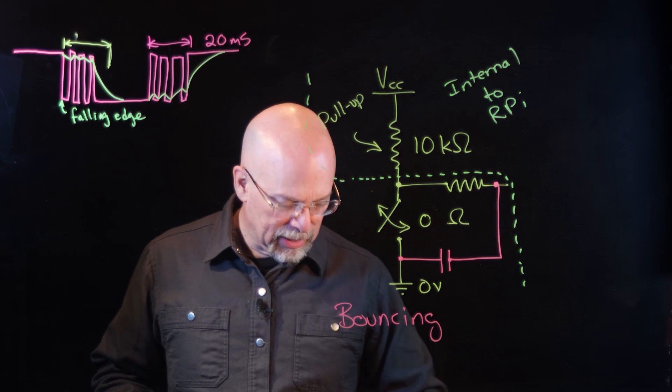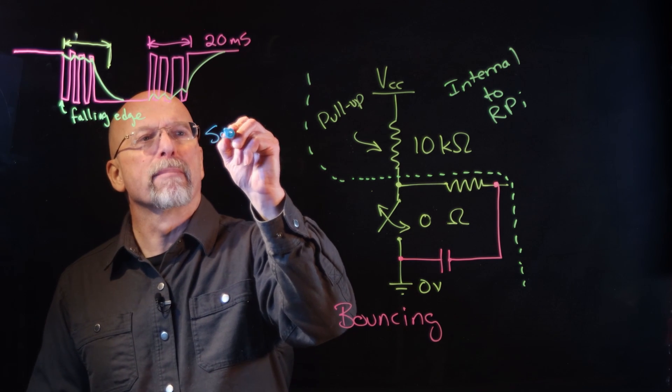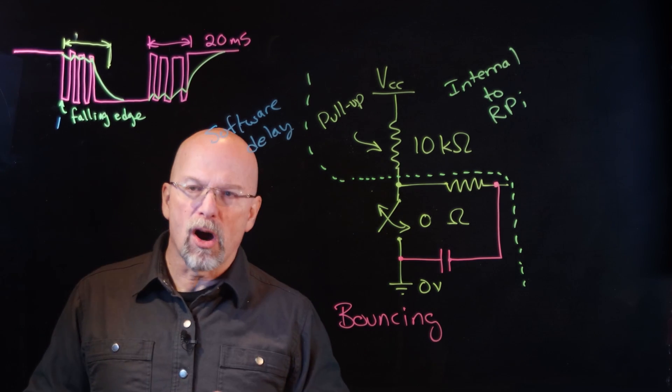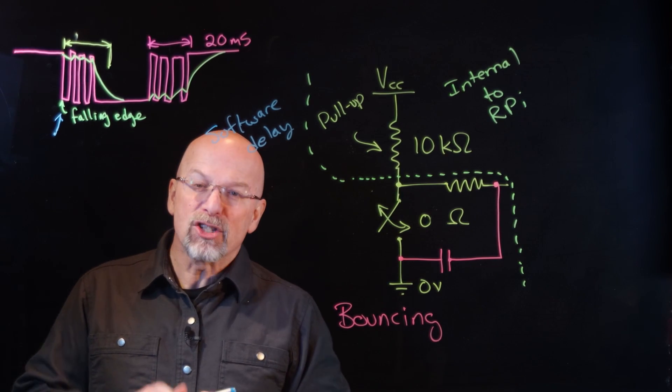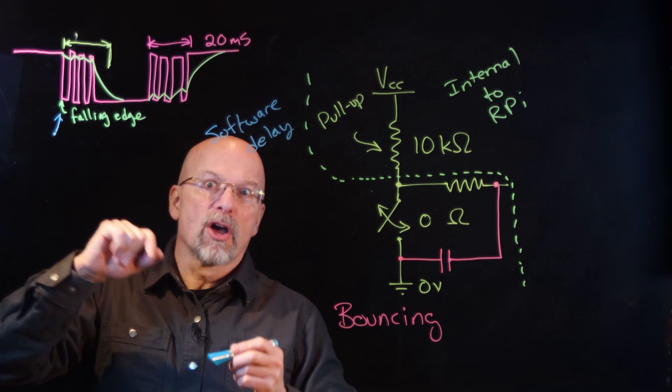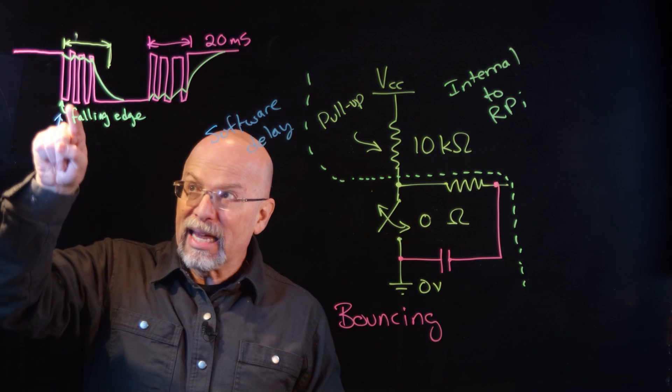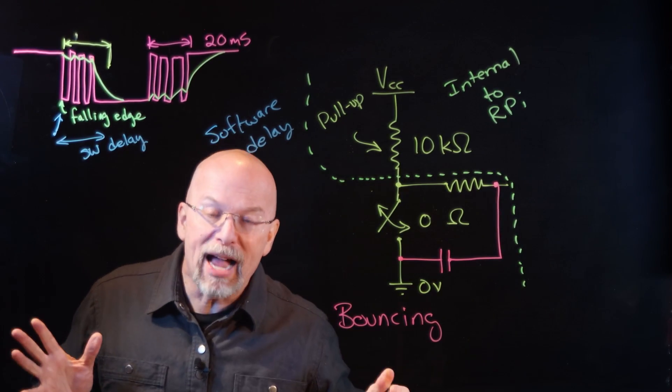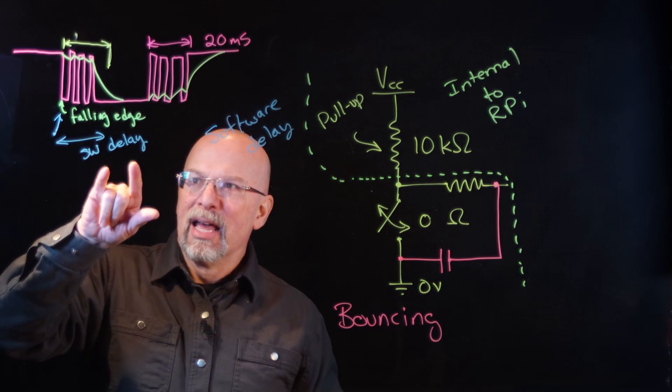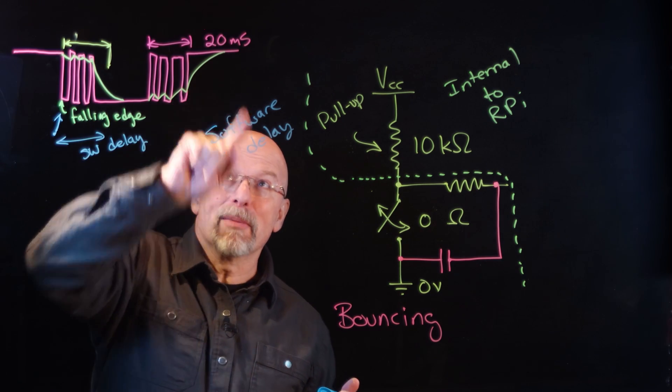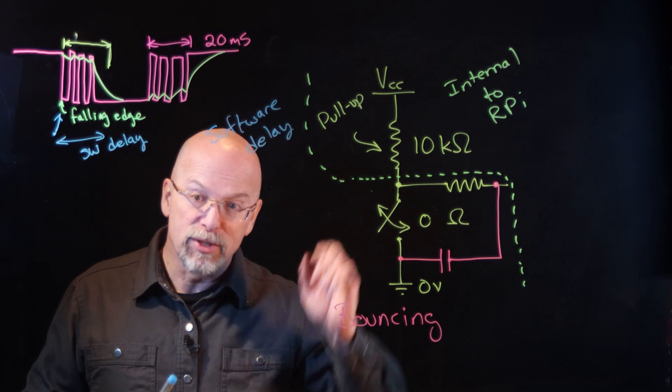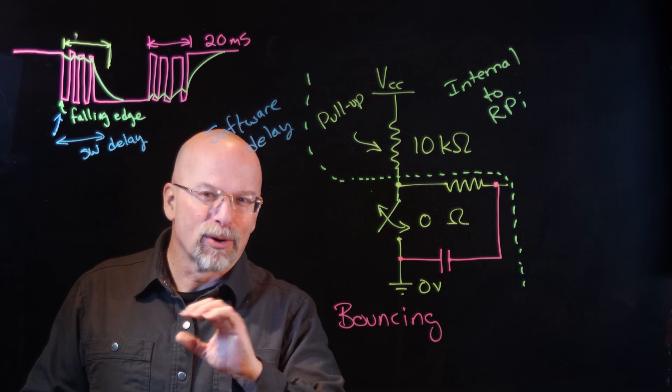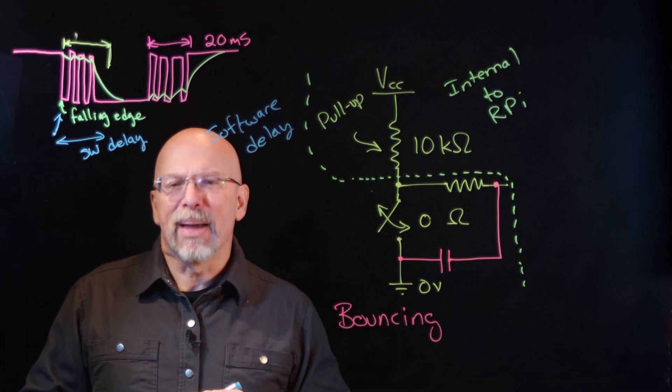Now another way of handling this is with something called a software delay. The way a software delay works is that we come into our interrupt service routine. We detect the button press right as soon as it happens, and then we handle it. For example, whatever reaction you need to have based on when that button is pressed, we handle it at that moment. But then, in software, we impose a delay before we go back to what we were doing, before we start processing or watching for anything else to happen. The software delay makes it so that, and once again, it only needs to be about 20 milliseconds. That software delay will allow all those little bumps to pass. The problem is that any time you impose a delay on your script or your program, what you're doing is you're locking up your program and keeping it from doing anything else that it could be doing. So there's actually a better way to do this.